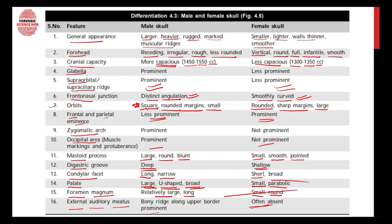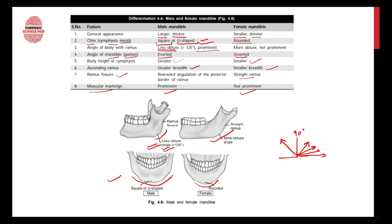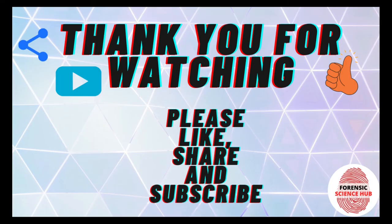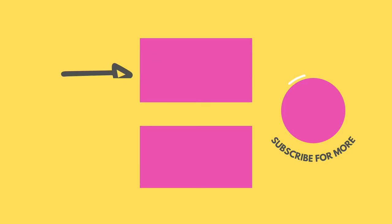Those were all the points to help differentiate between male and female mandible and skull. In my next video I'm going to discuss male and female pelvis, which is the single bone that gives the best accuracy in the sex determination process. Do watch that video as well. Thank you for watching.